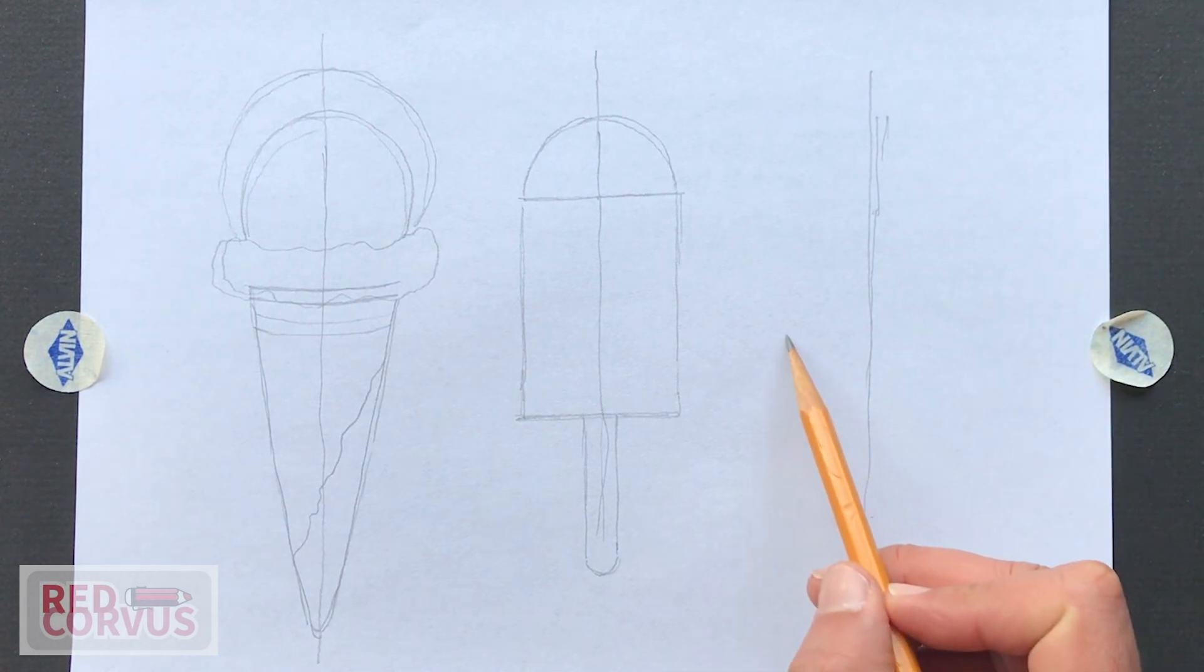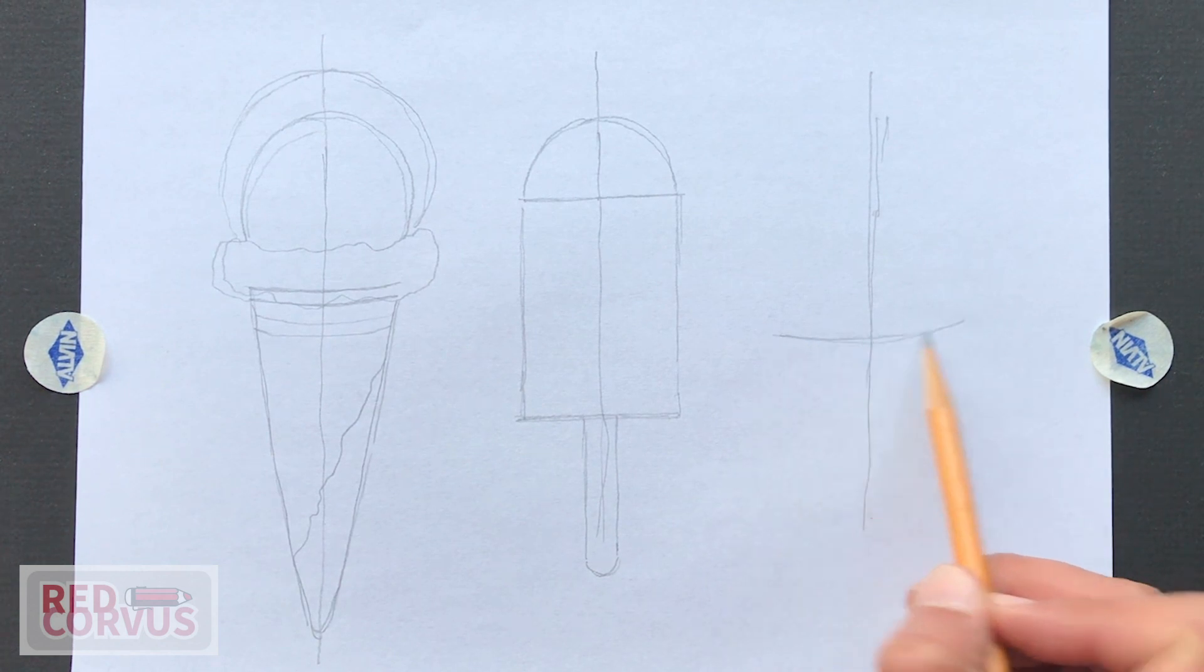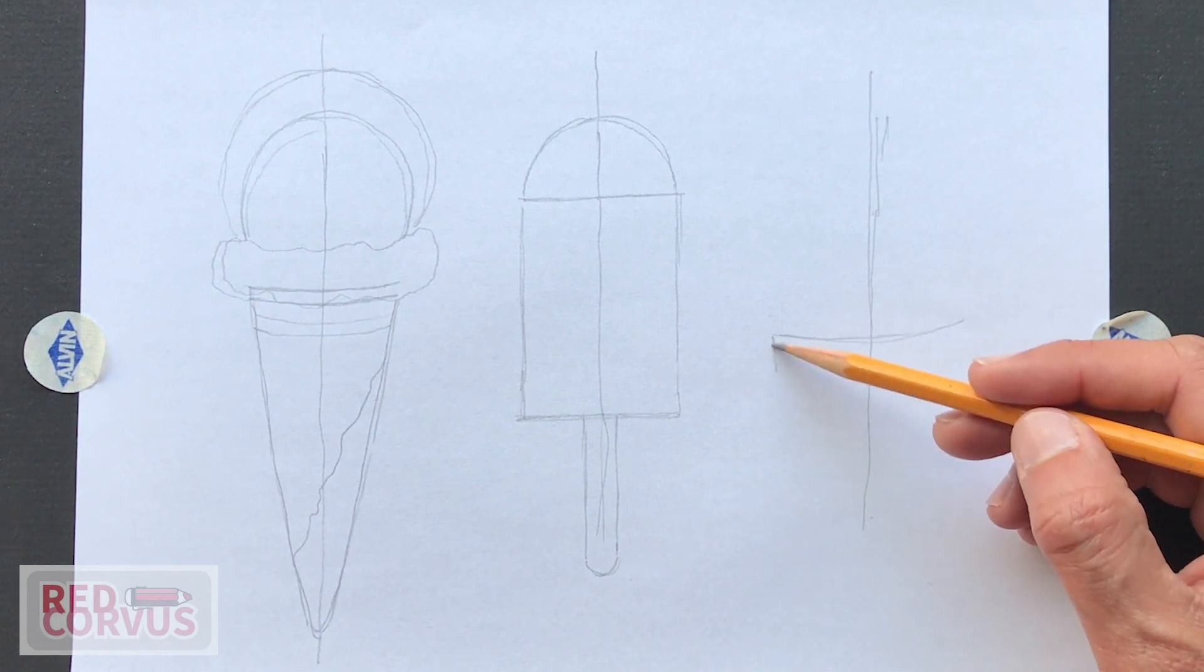And now the soft serve ice cream for which I'm going to start with the cup. It kind of looks like a flower pot a little bit.